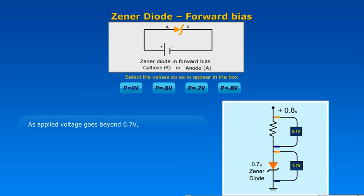When V is equal to 0.8V, i.e. applied voltage goes beyond 0.7V, then the voltage across Zener diode remains 0.7V.